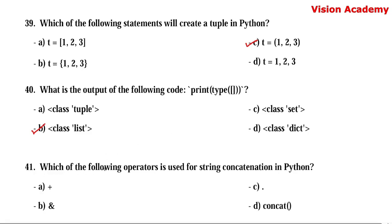Question number 41. Which of the following operators is used for string concatenation in Python? Option A: plus (+). Option B: ampersand. Option C: dot. Option D: concat. Here, option A — plus (+) — is the right answer.